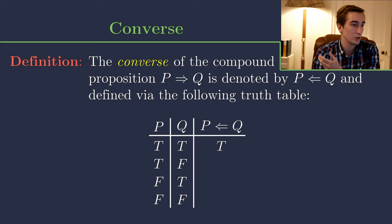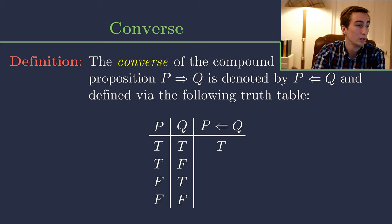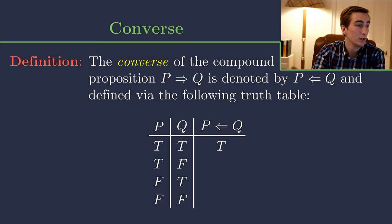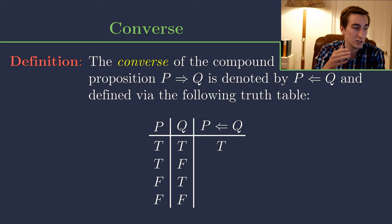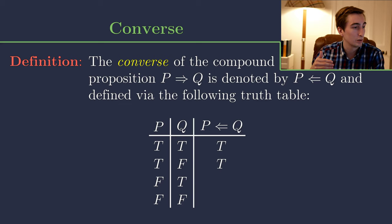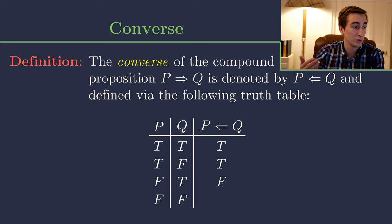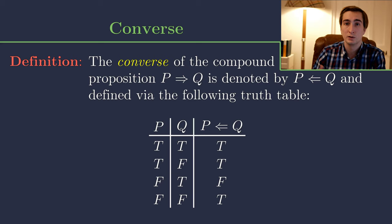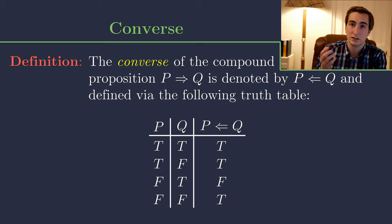For the converse q implies p: when q is true and p is true, that maps to true. When q is false and p is true, a falsehood can imply anything, so this value is true. When q is true and p is false, we have a truth implying a falsehood, which is false. And when q is false and p is false, again a falsehood can imply anything, so the last value is true. So the converse simply flips the original implication: if it starts as p implies q, the converse is q implies p.